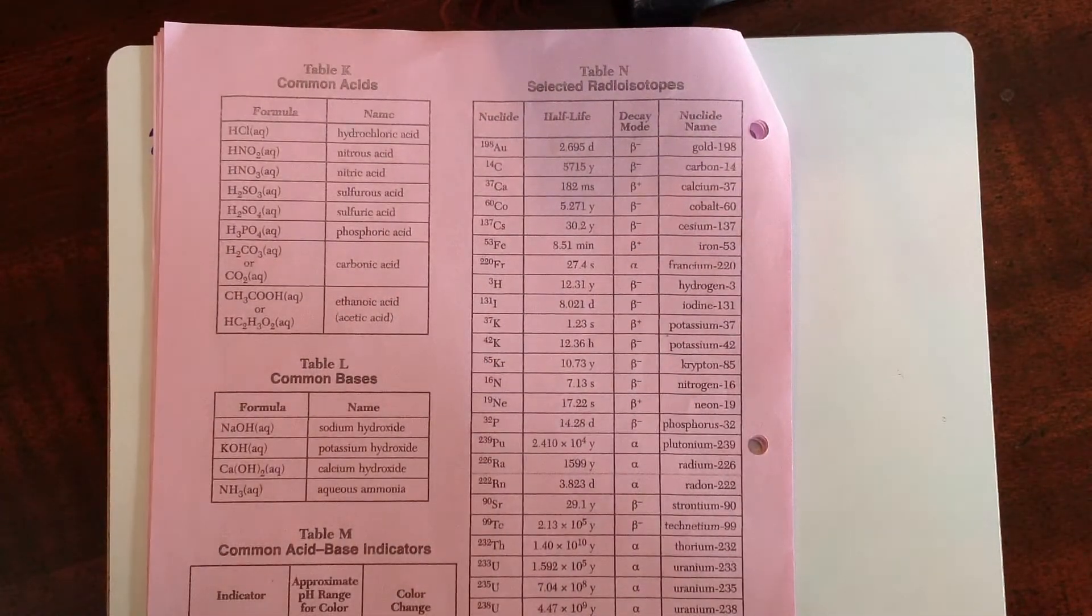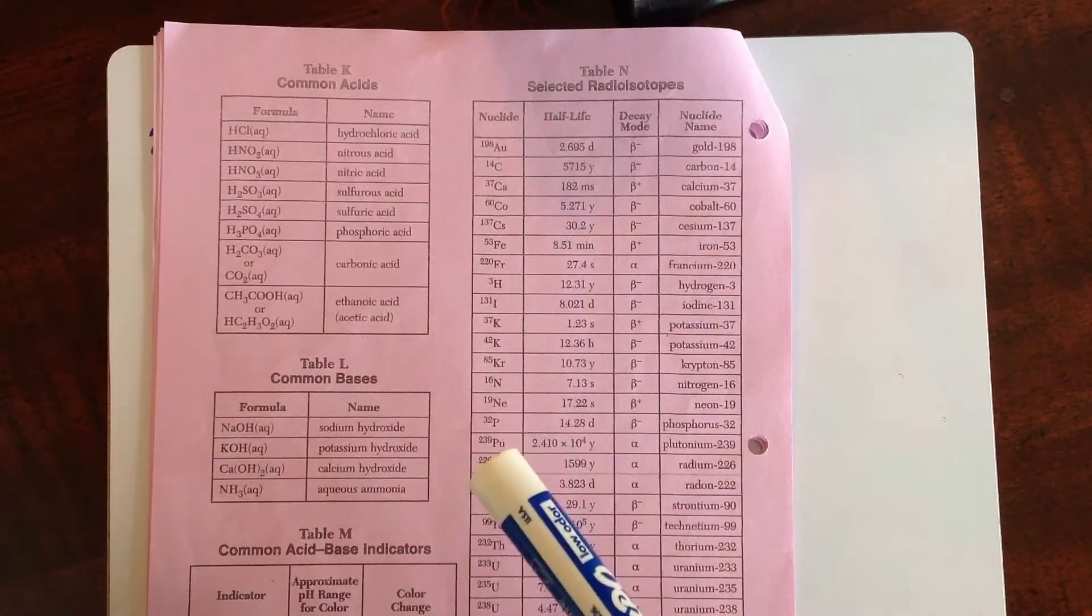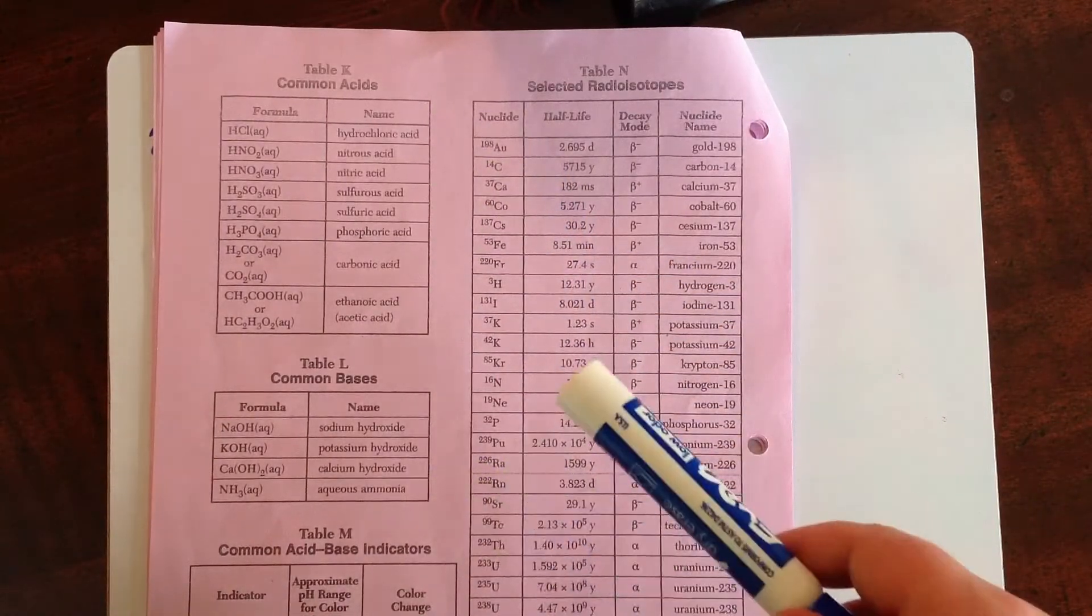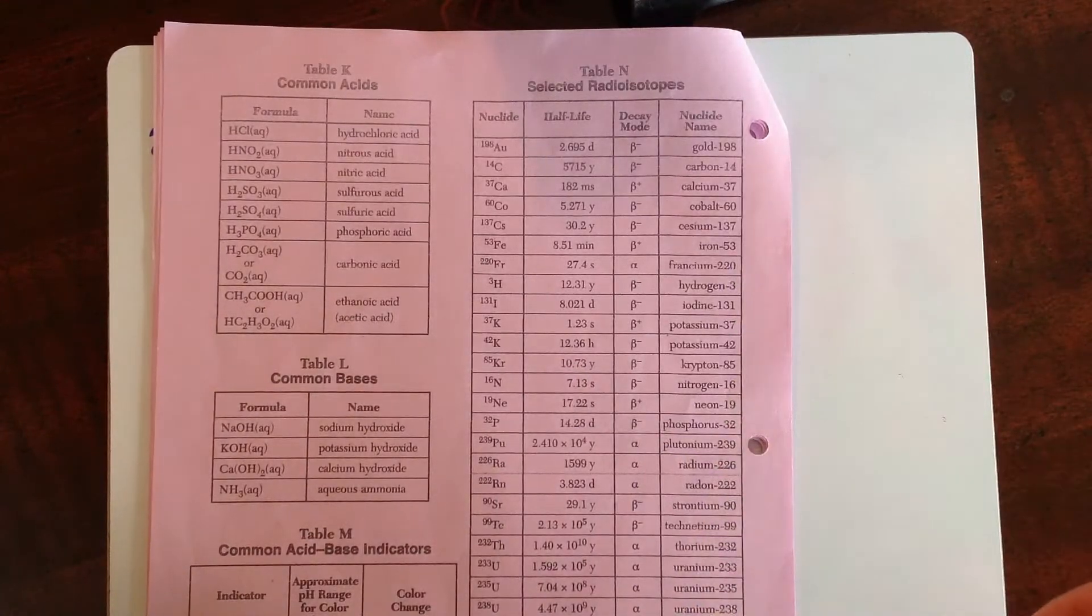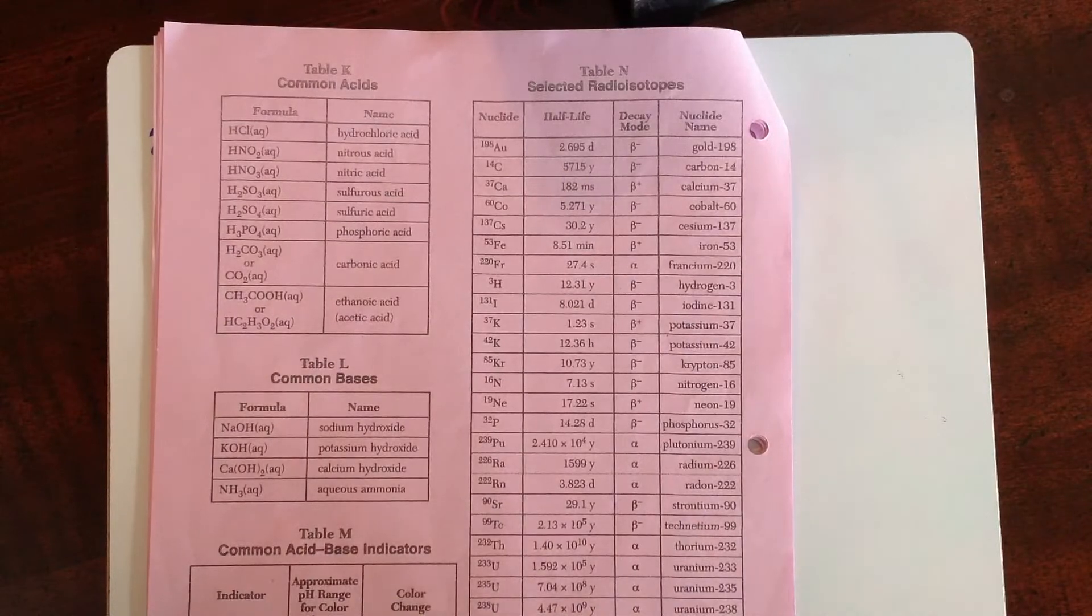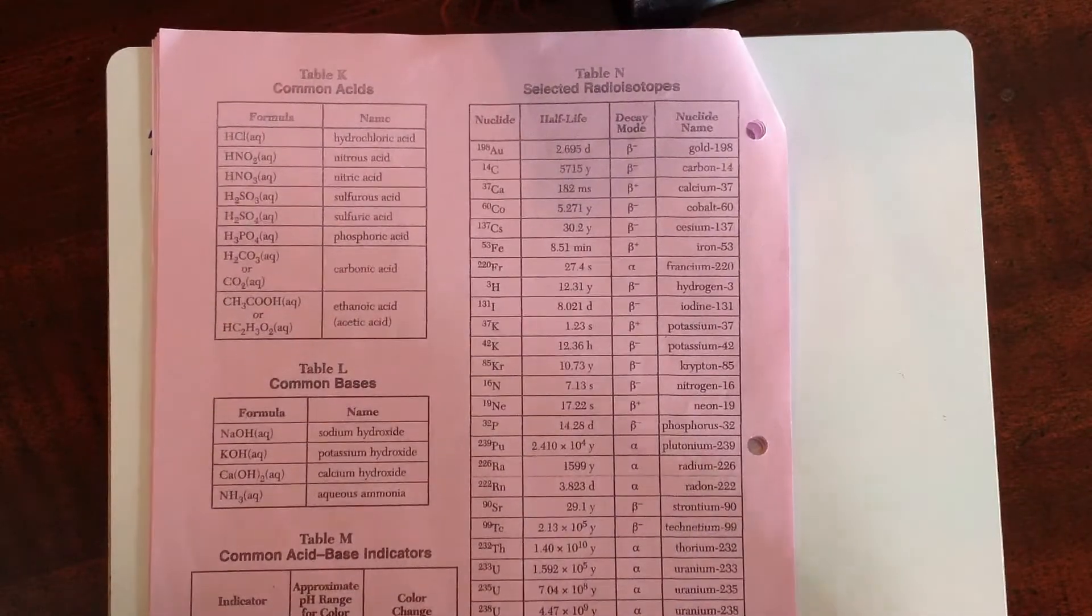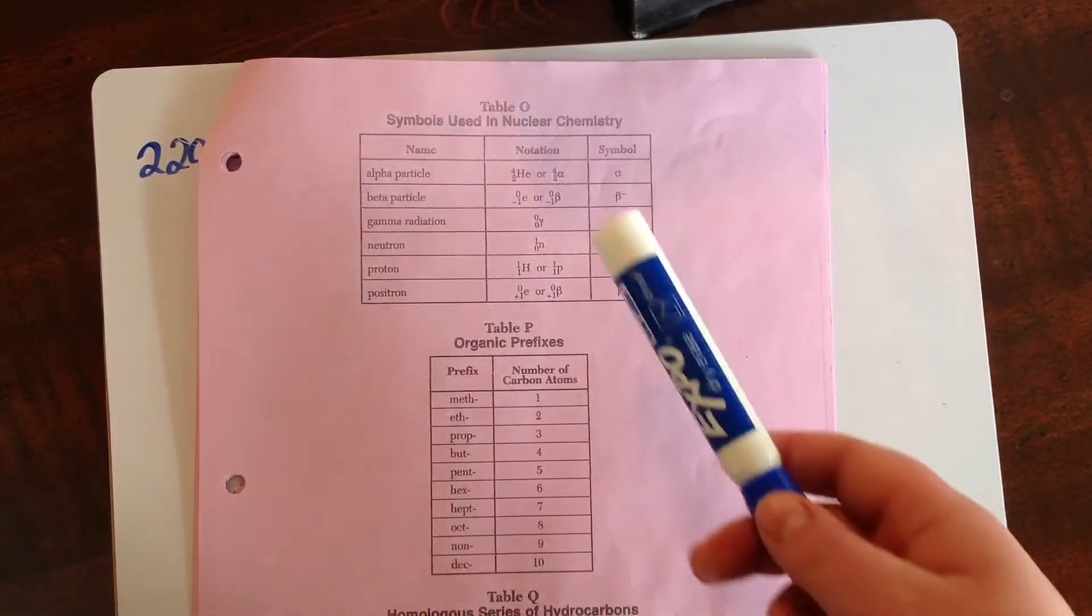To write the nuclear equations for radioactive decay, you are going to need your reference table. It gives you a list of several different radioactive isotopes, as well as their half-lives, which we'll talk about later, and their decay mode. So there are several different ways that a particular radioactive isotope can decay. If you flip over and look at table O, it gives you what each of those things mean.